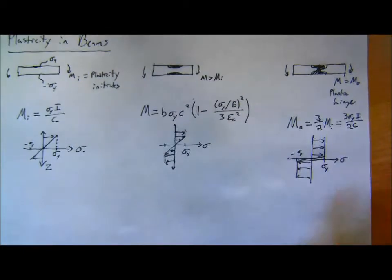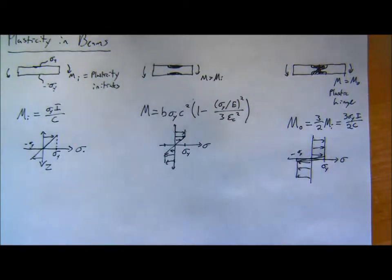At some point I get to a point where there's a full plastic hinge in the beam. Where M is equal to M naught. Plastic hinge. And this M naught happens where this is three halves MI or three sigma YI over 2C. This is where I have the whole thing across the cross section as basically fully plastically deformed. There's always going to be some elastic region in the center, but at some point we assume that that part that's elastic is very small relative to the total height of the beam. I'll be posting slightly more detailed notes or at least cleaner notes on canvas sometime.